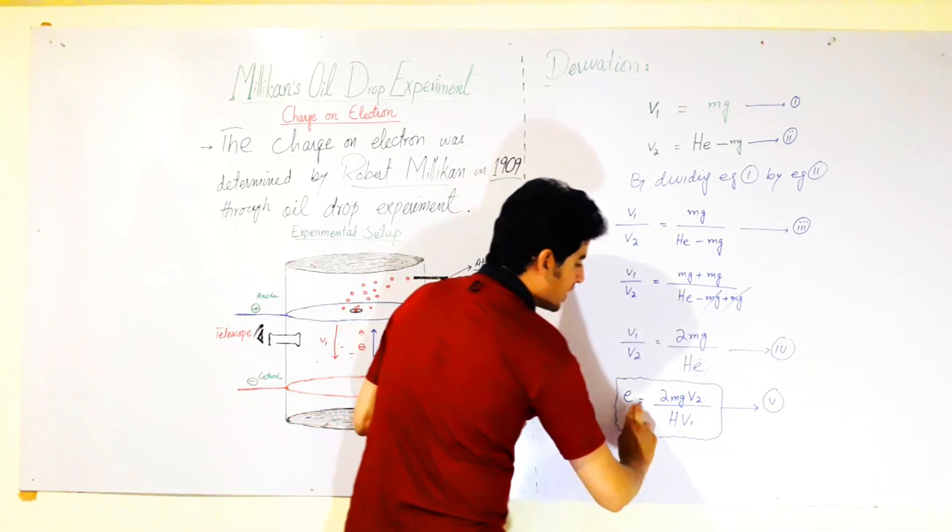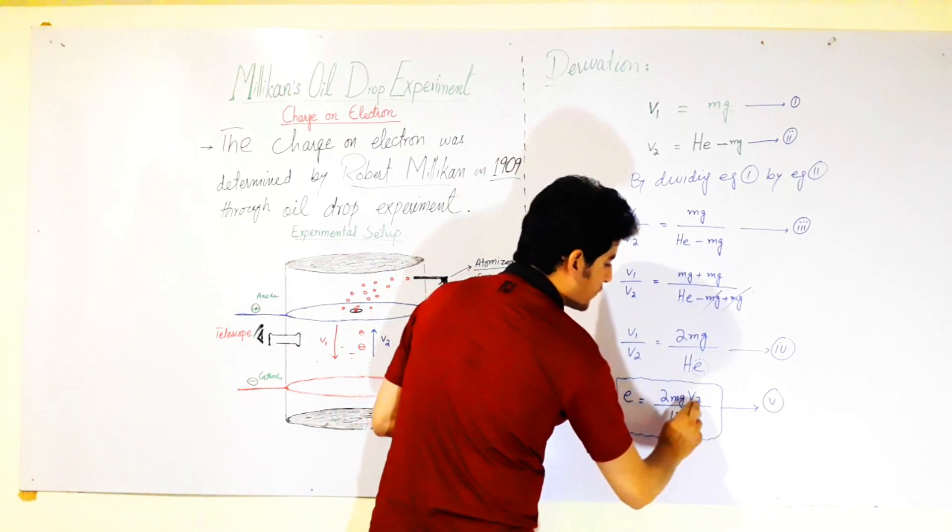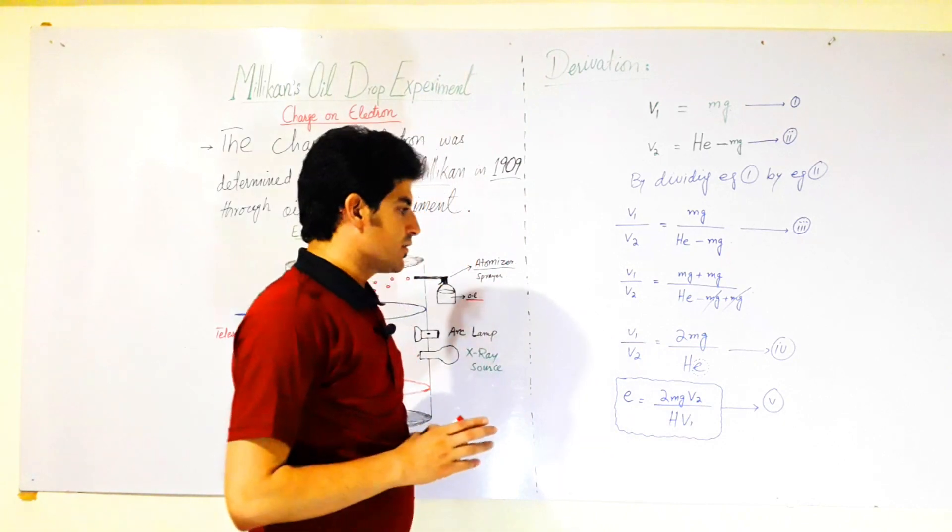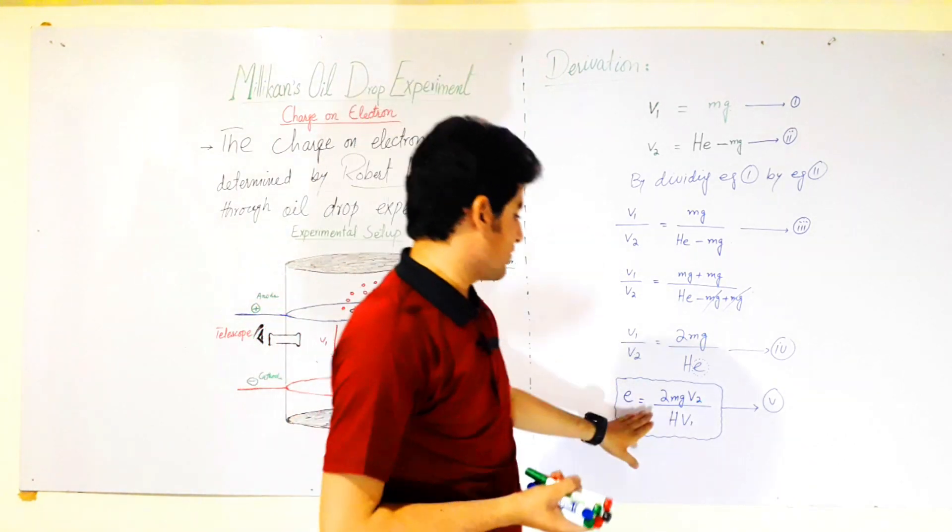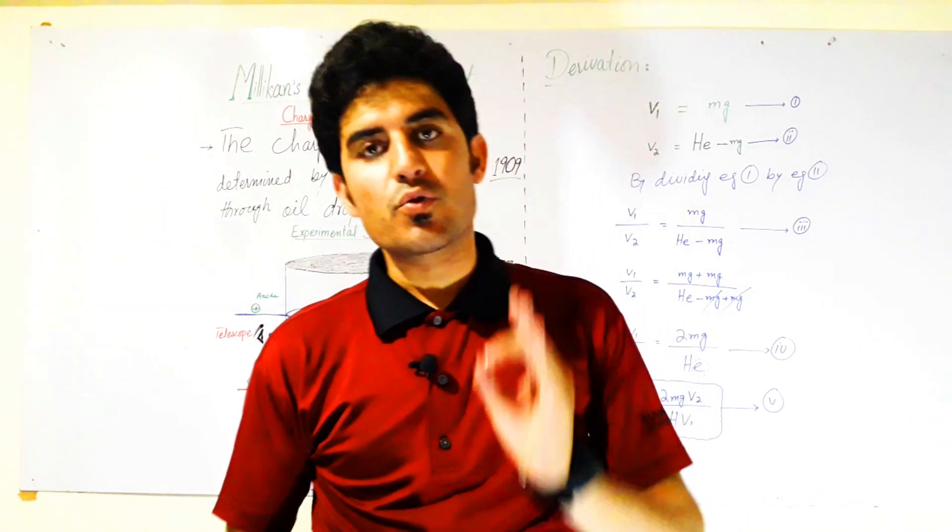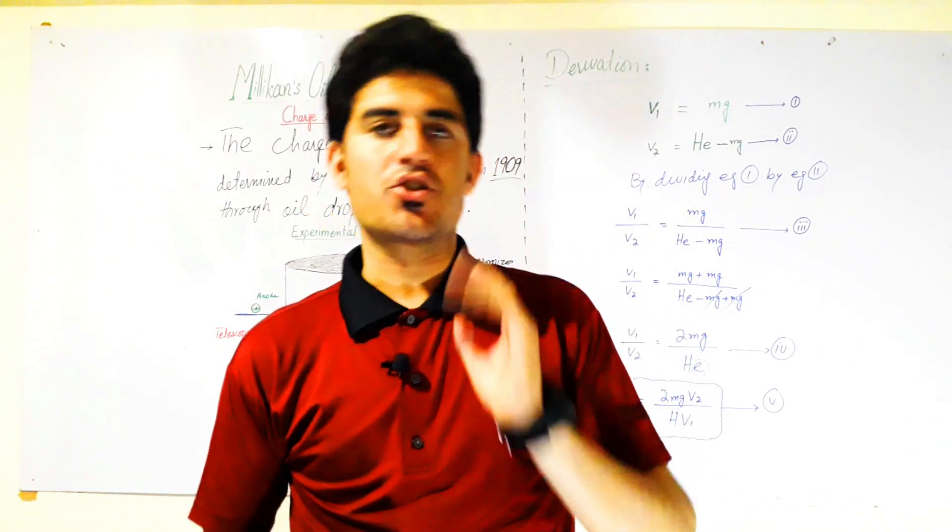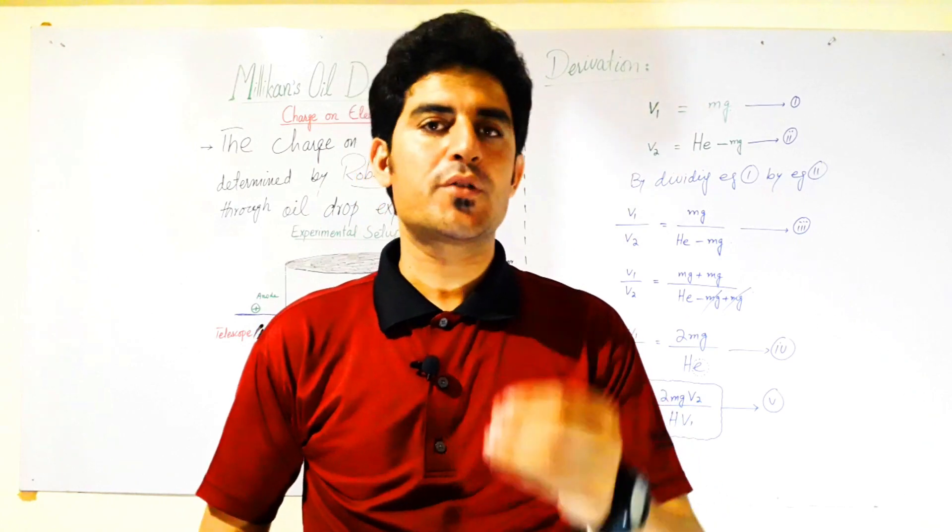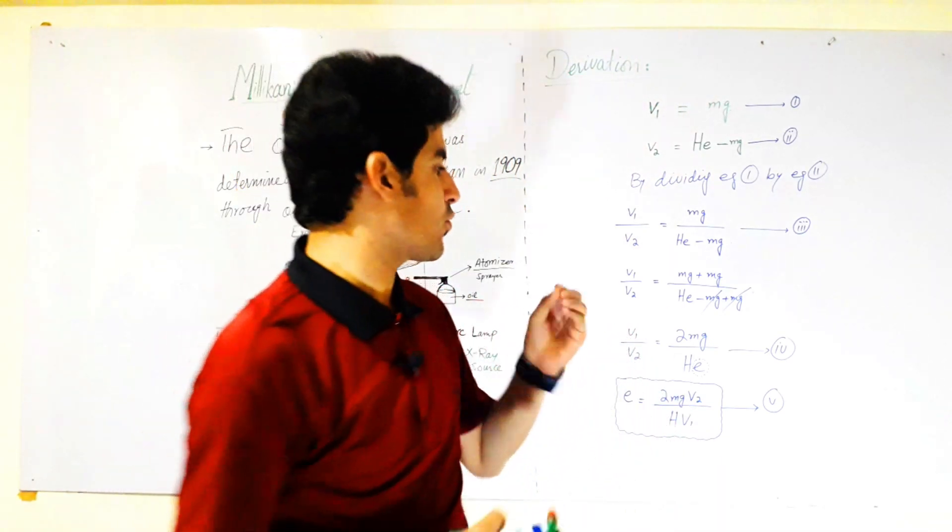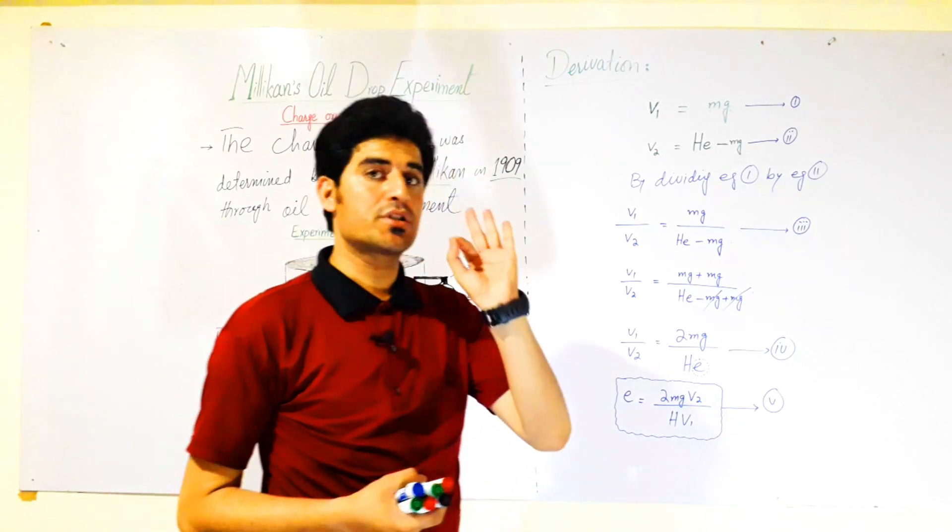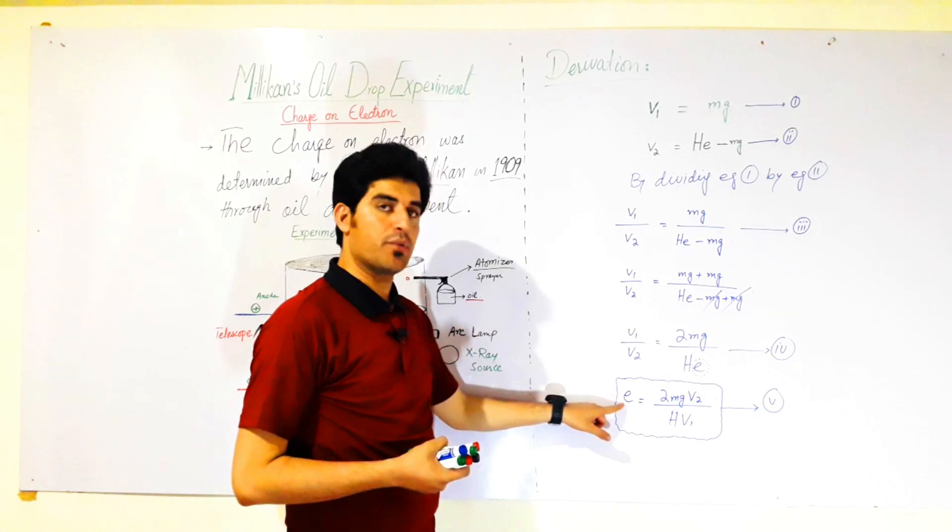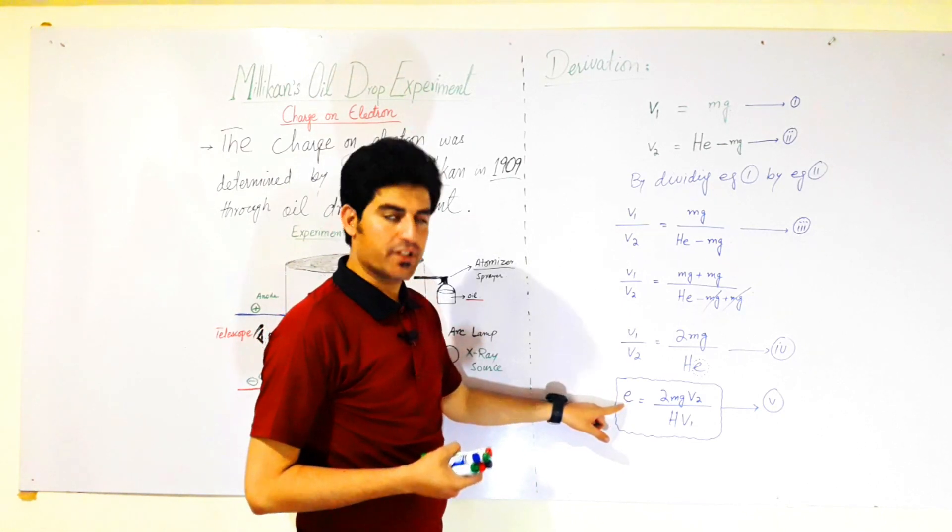q is equal to 2mg v2 divided by E v1. This is the final expression to calculate the charge on an electron for each droplet. The electrons adsorbed on the droplet, and the charge on those electrons can be determined using this final expression, equation number four.